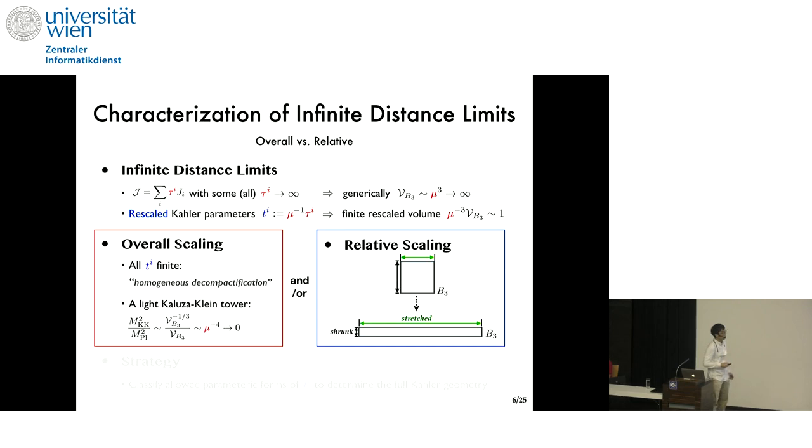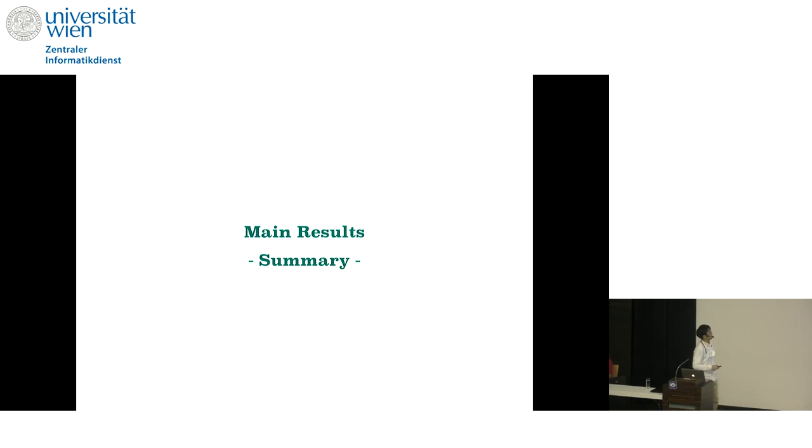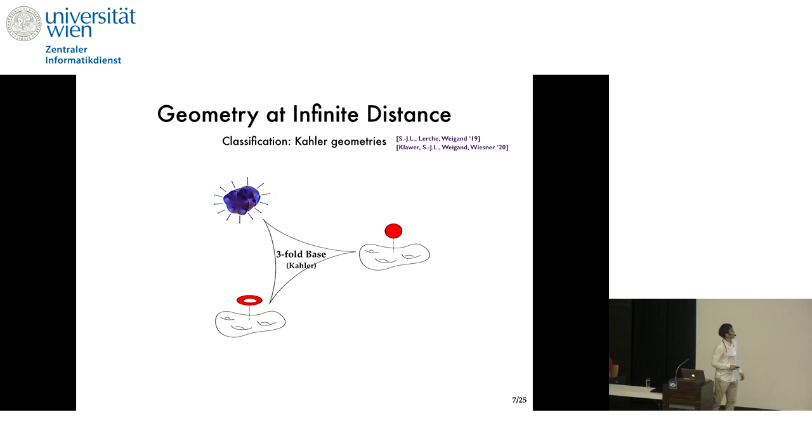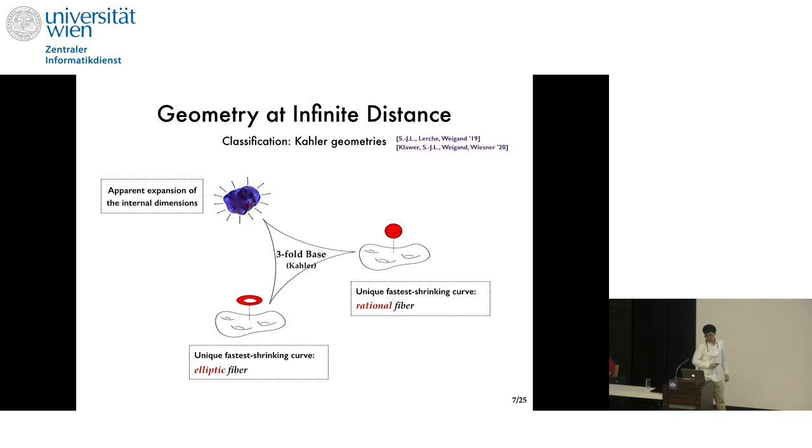Then, we are bound to have some shrinking curves in the geometry, and they will play a very important physical role later. For an intuition, you can just imagine stretching one side of the rectangle while keeping the area fixed, and you will get some shrinking curve. We actually determined the full Keller geometry at infinite distance together with some relevant topology by first classifying the allowed parametric forms for these parameters, t i. But, in the interest of time, I will only just summarize our main results of this analysis. Geometry first. The Keller geometries of the three-fold basis at infinite distance are classified into three types.